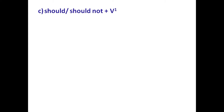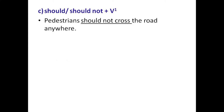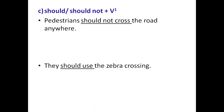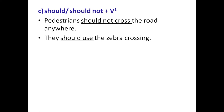Structure C is should or should not plus V1. Example: pedestrians should not cross the road anywhere — meaning they cannot cross from wherever they like; they should cross from a certain part of the road. The structure is should not plus V1. Another example: they should use the zebra crossing — that is a traffic rule. The structure is should plus V1.